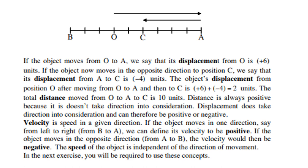The total distance moved from O to A to C is 10 units. Distance is always positive because it doesn't take direction into consideration. Displacement does take direction into consideration and can therefore be positive or negative.